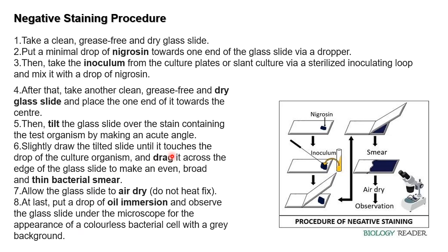Now let's study the procedure of negative staining. For this technique you need two clean, grease-free, dry glass slides. On the first glass slide, put a minimal drop of nigrosin towards one end using a dropper. Then take an inoculum from your culture plate or slant using a sterilized inoculating loop and mix it properly with the drop of nigrosin.